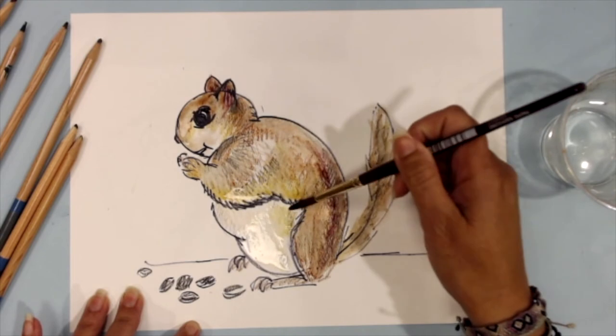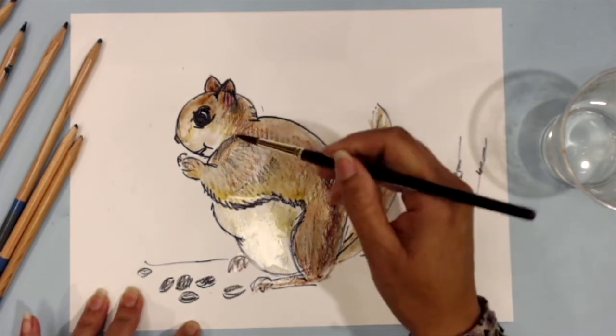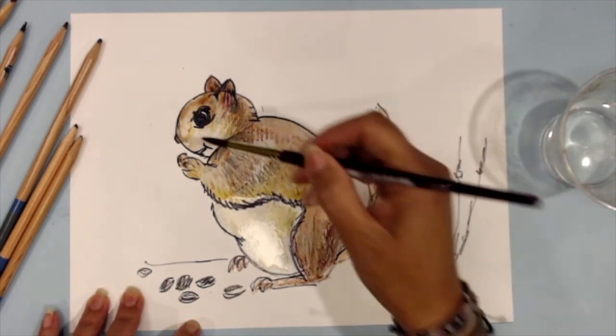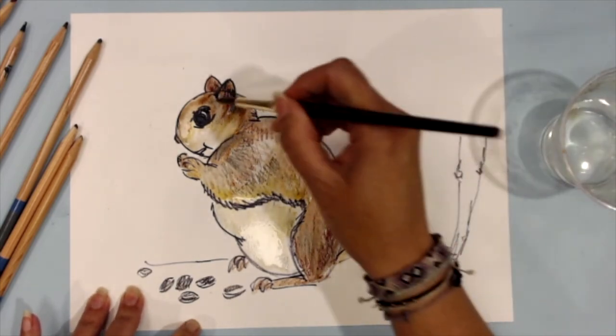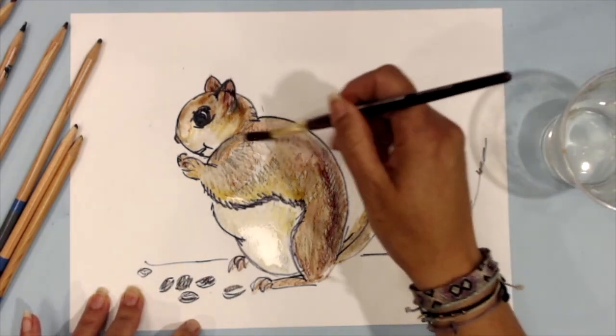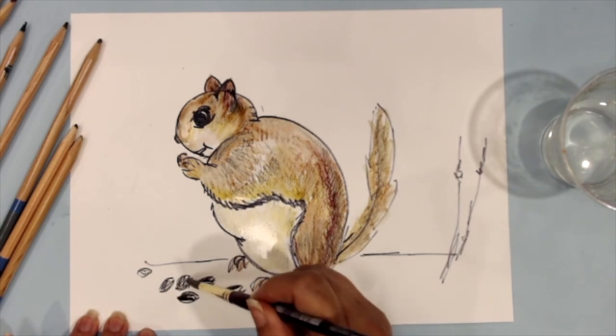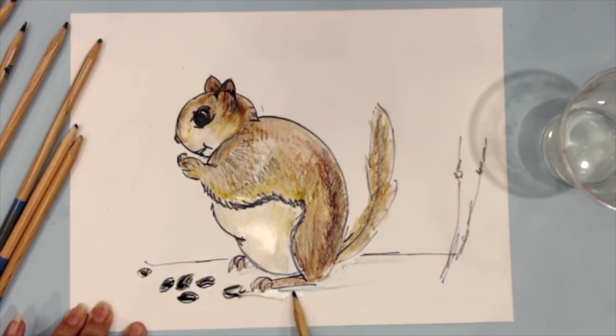Very light here on his white cream colored belly. And if I go back with more water, it can lift some of that paint pigment. If I got too dark anywhere. And I'm going to paint these little seeds a little bit. Just a touch. I think I'll do a little bit of shadow here behind my squirrel.